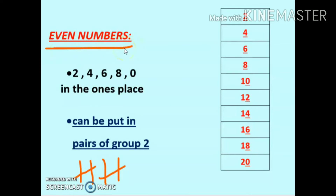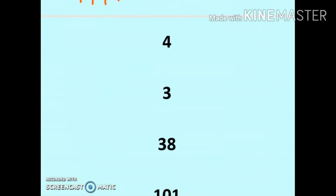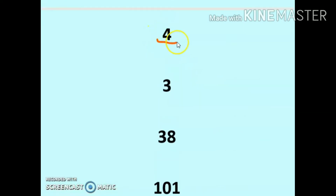Now suppose we have the number 6 — 1, 2, 3, 4, 5, 6. Pair them up: this, this, and this. Nothing is left, so it is an even number.